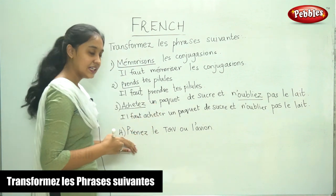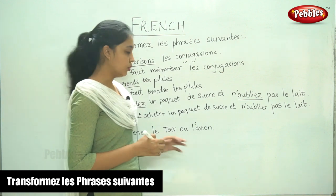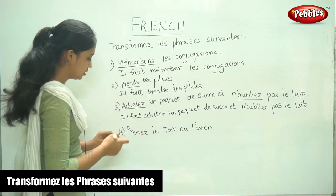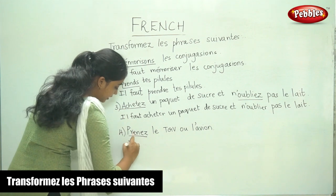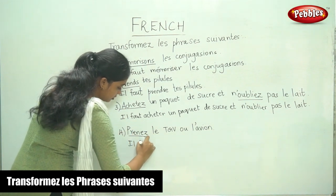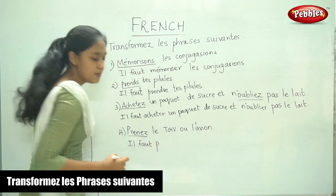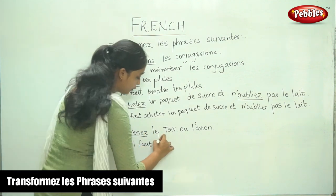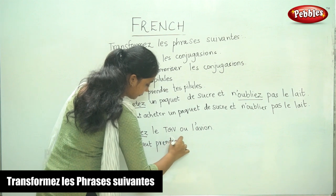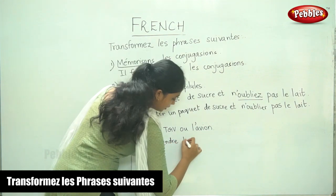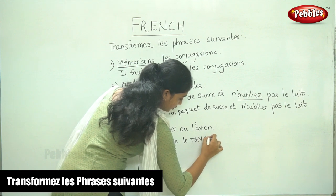And finally, the last sentence: Prenez le TGV ou l'avion. So, the verb here is Prenez. Il faut — the infinitive form is Prendre. Il faut prendre le TGV ou l'avion.